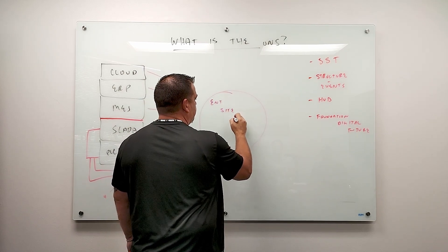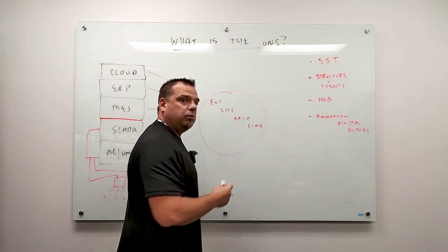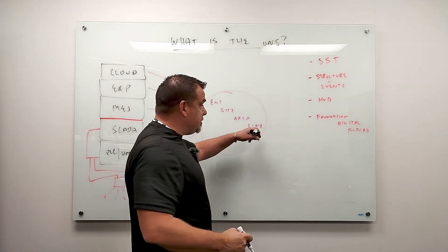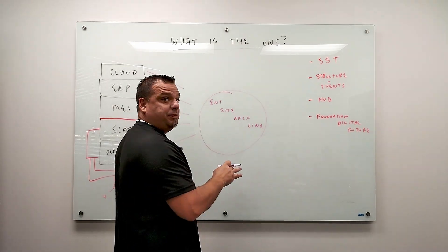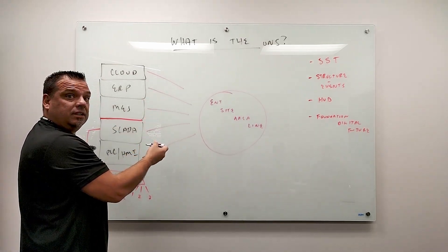Okay. So we use ISA 95 part two to structure our business. So we structure it, enterprise site, enterprise site, area, line, and then sell below. Okay. And we add a bunch of different namespaces in here. This is a unified namespace. We take the namespaces from all these functional layers.